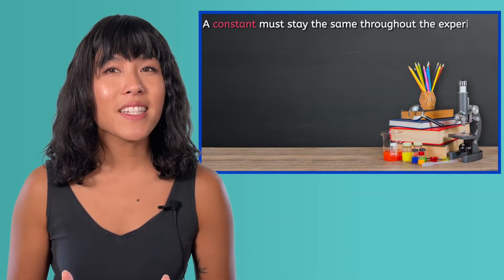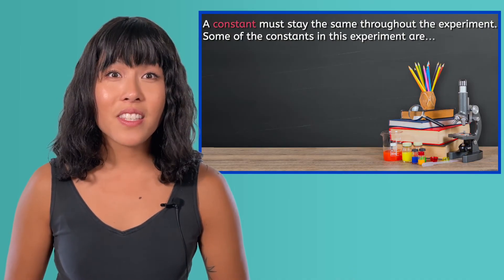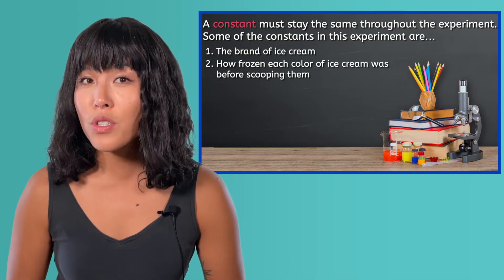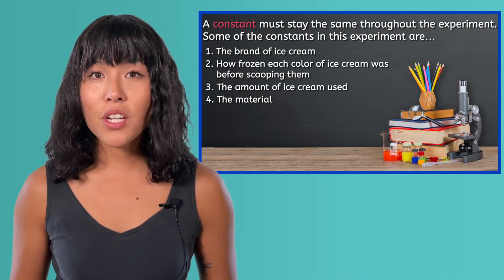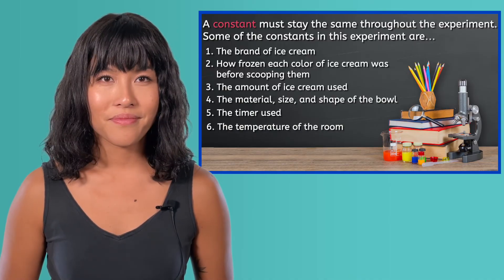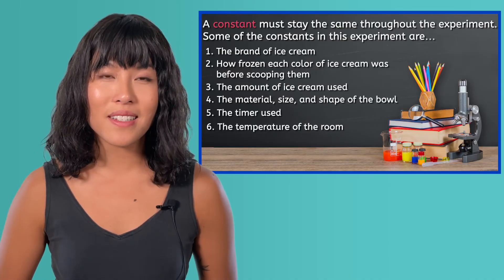A constant must stay the same throughout the experiment. Some of the constants in this experiment are the brand of ice cream, how frozen each color of ice cream was before scooping, the amount of ice cream used, the material, size, and shape of the bowl, the timer used, and the temperature of the room. A constant can be many different aspects of an experiment. The evidence you collect at this step may be in support of your hypothesis or it may reject it. Either way, your experiment is a success because it still provides valuable data, even if the data is different from what you expected.